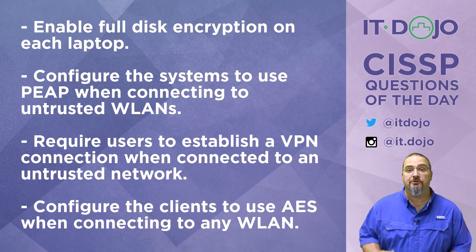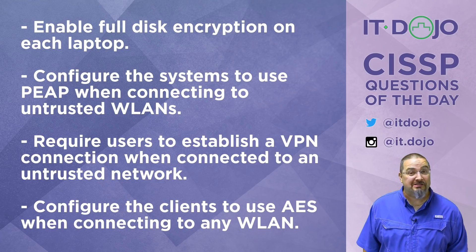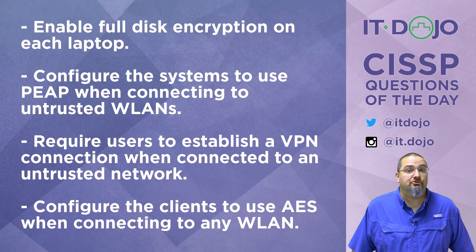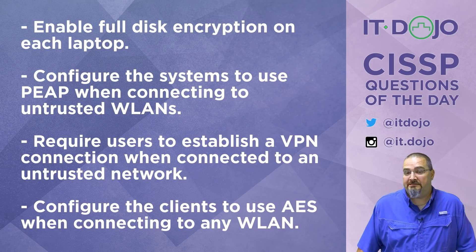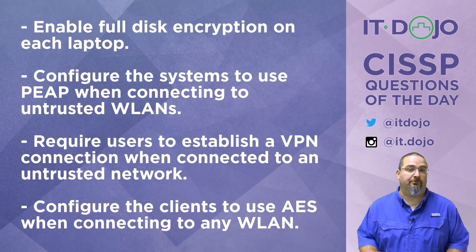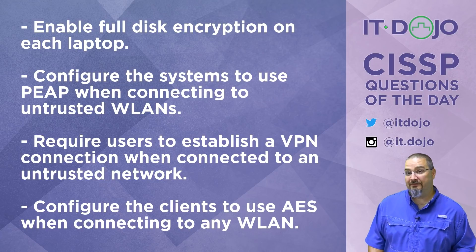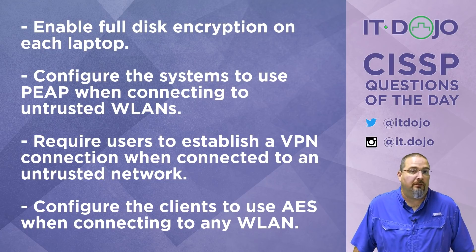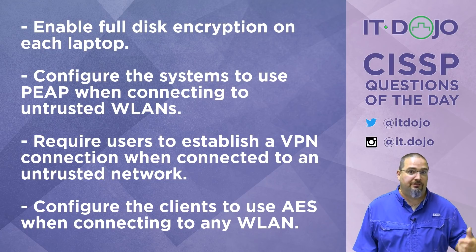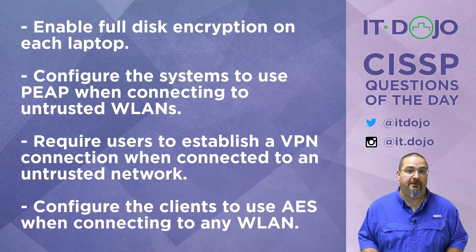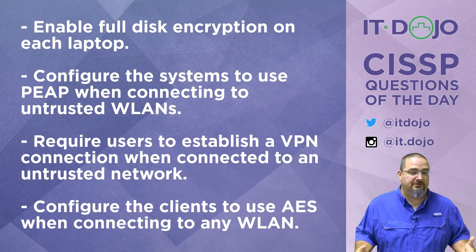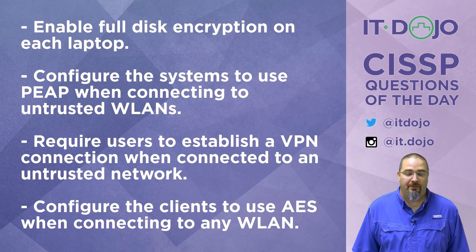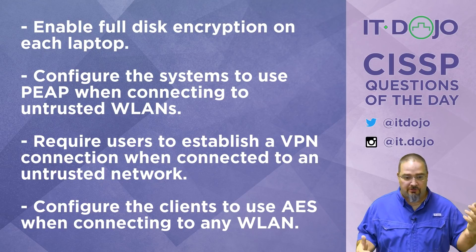How about configuring the systems to use Protected EAP when connected to an untrusted wireless LAN? That's an awesome idea, except clients don't control how authentication and connection are established — it's the access point that controls it. So if the access point is not configured to do Protected EAP, you can want to do Protected EAP all day long but you still won't be able to. Both the supplicant and the authenticator have to be set up, and that's just not going to happen when you're out at a Starbucks or getting free Wi-Fi at the mall.